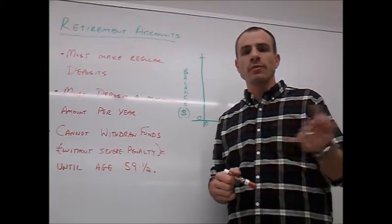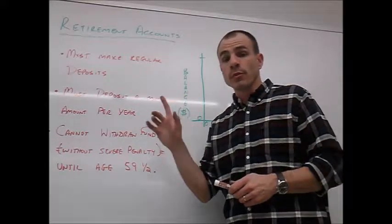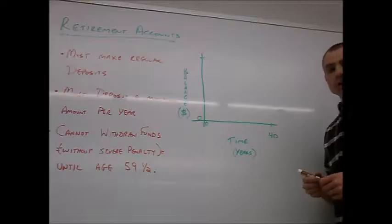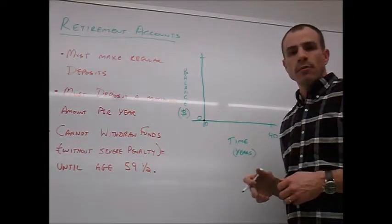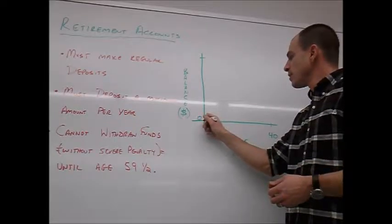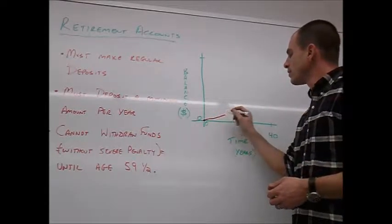But there's a severe penalty that you must pay because ultimately the idea behind this is that you're going to save this money for a long amount of time. And in fact, you're not allowed to withdraw the funds without that severe penalty until you're at age 59 and a half. So that's a long time from now.